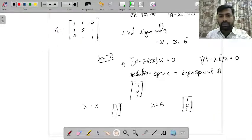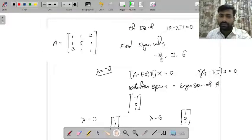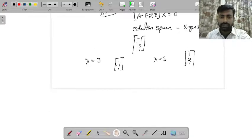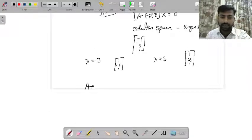Now, since the eigenvalues are distinct, definitely the matrix is diagonalizable. And we can express A in this form: A equal to P, D, P inverse.